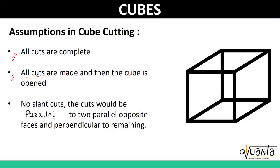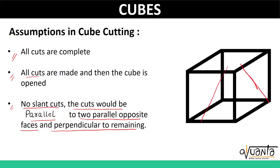The next assumption is all cuts are made and then the cube is opened, which means that if it is given in a question that a cube has to be divided making five cuts, then first of all, all those cuts will be made and then only the cube will be opened or scattered. Then the next assumption is no slant cuts. The cuts would be parallel to two parallel opposite faces and perpendicular to the remaining.